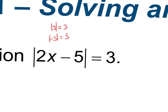Does anybody know what absolute value means? Anything inside of it is positive. Does anybody know what absolute value measures? The distance from 0. So if I say positive 3, it's 1, 2, 3 spaces from 0. If I say negative 3, it's also 1, 2, 3 spaces from 0. Absolute value just measures the distance away from 0.